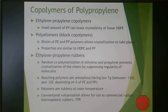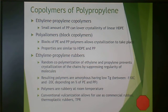Block copolymers of polyethylene and polypropylene still allow for crystallization, but create something similar to a blend of polyethylene and polypropylene without phase separation — since it's in the same molecule, it can't phase separate, but it gives similar properties to a blend, providing higher temperature properties.